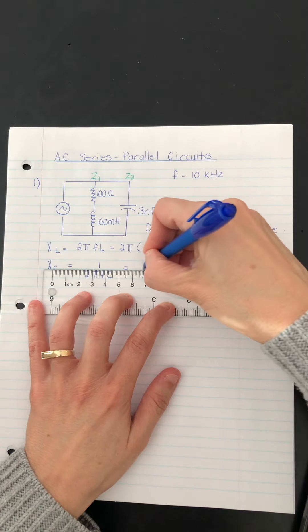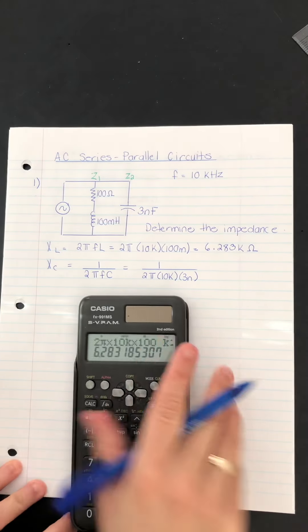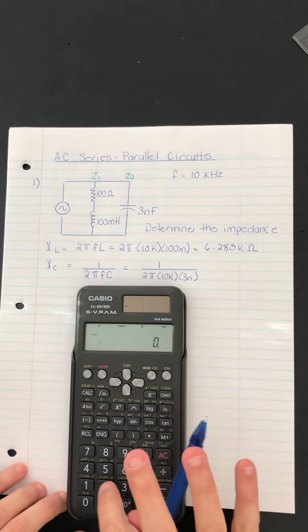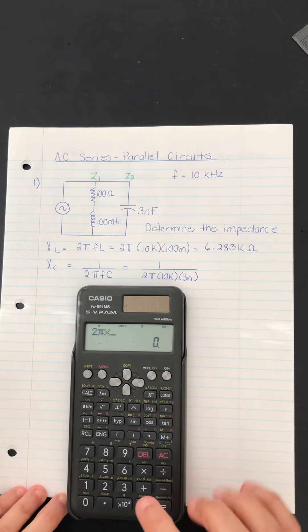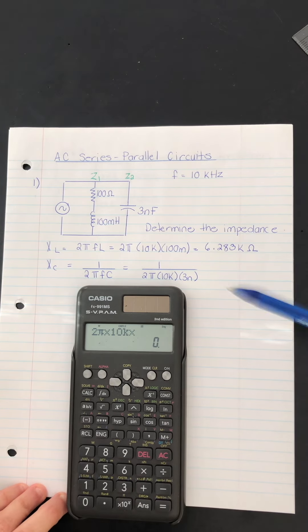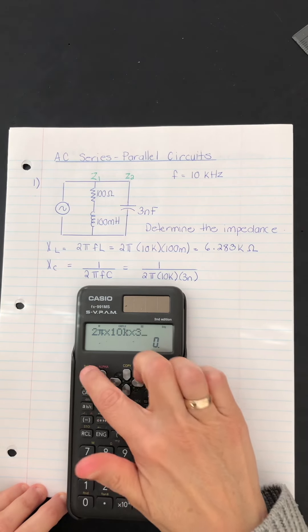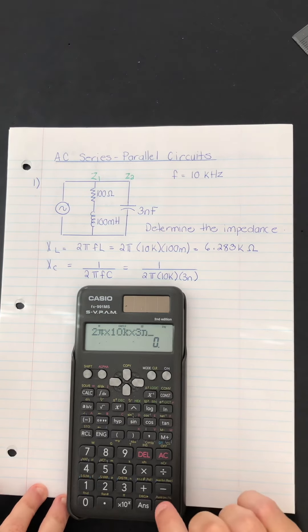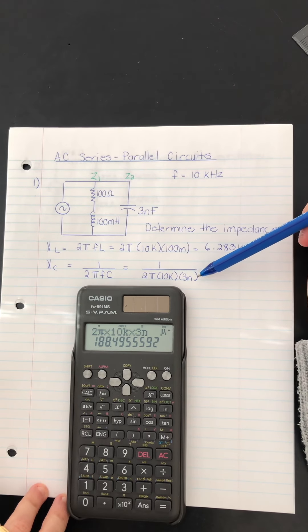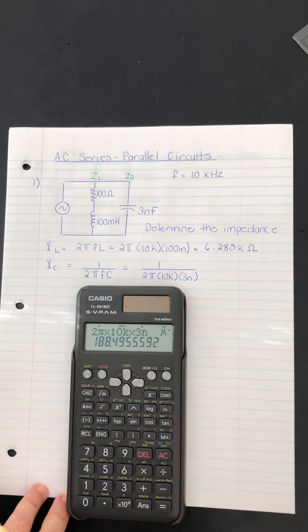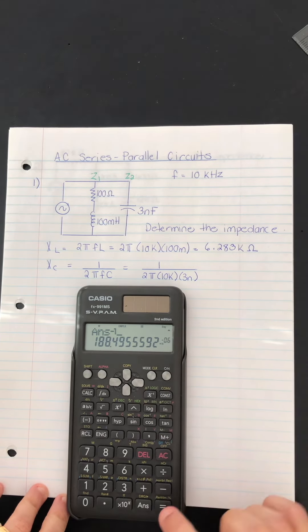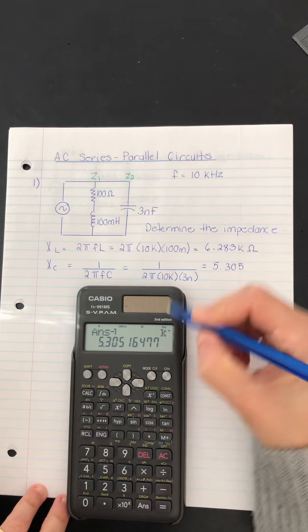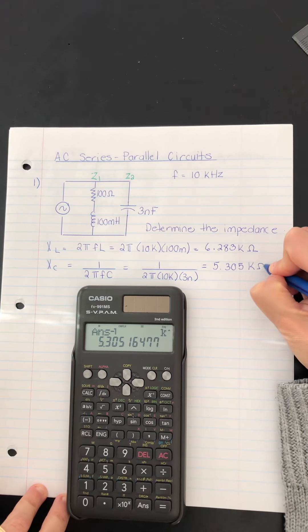So I'm going to show you that calculation as well. Now remember that I like to punch the whole bottom in first and then invert that. So again, 2 pi multiplied by 10 kilo and by 3 nano. Push equals. So that's an answer for the denominator. And then we want to invert that answer. So X negative 1 equals. So this is 5.305 kilo ohms.